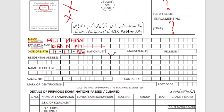Next, for gender or sexuality field, fill it using capital letters. Then there is a religion field — you have to fill that in capital letters as well, writing whatever your religion is.